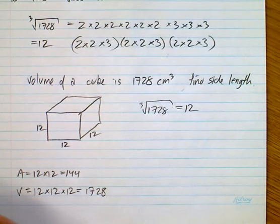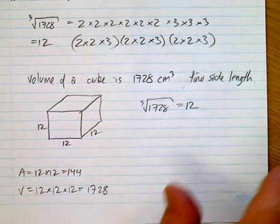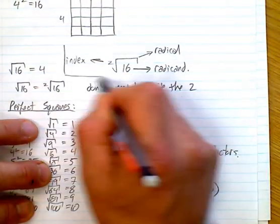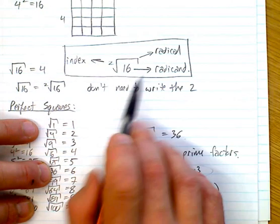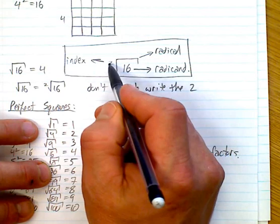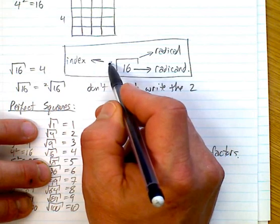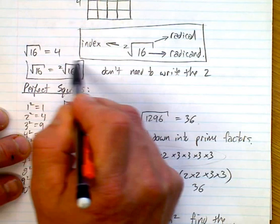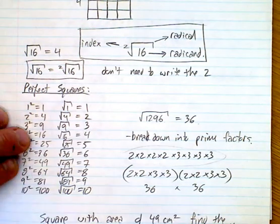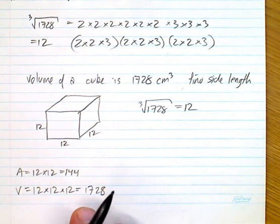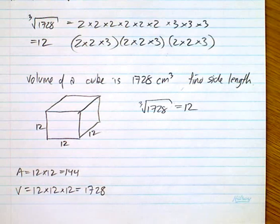Remember what we talked about: the radical, the radicand, and the index — these are very important to grasp. When we have a square root, we don't always have to write the index of 2; those two notations are exactly the same. As soon as we get up into cube roots, fourth roots, and fifth roots, yes, we are going to need to write the index in.